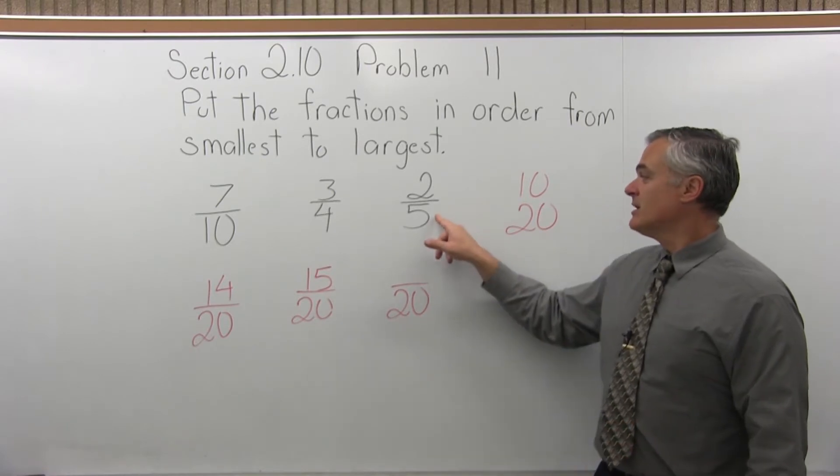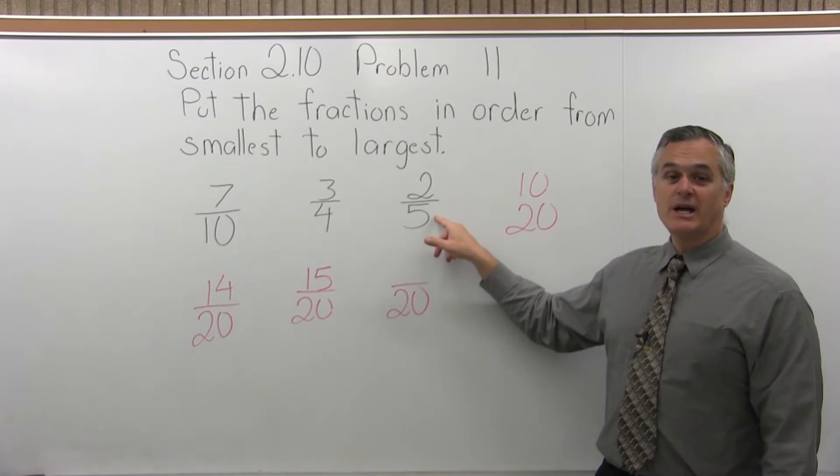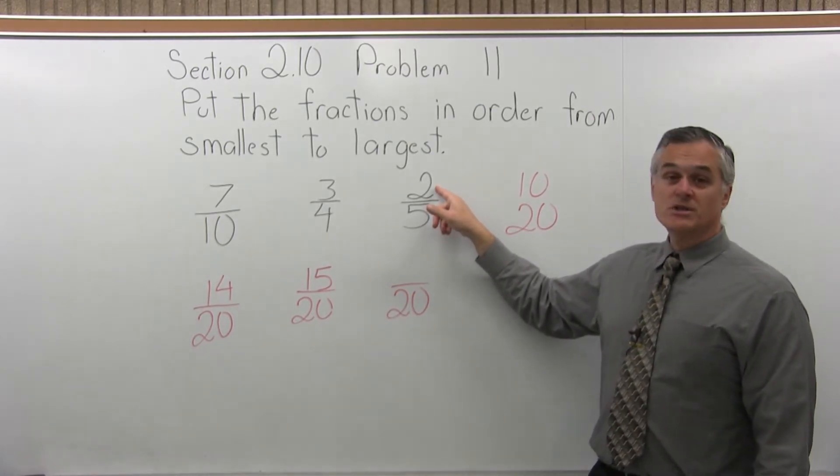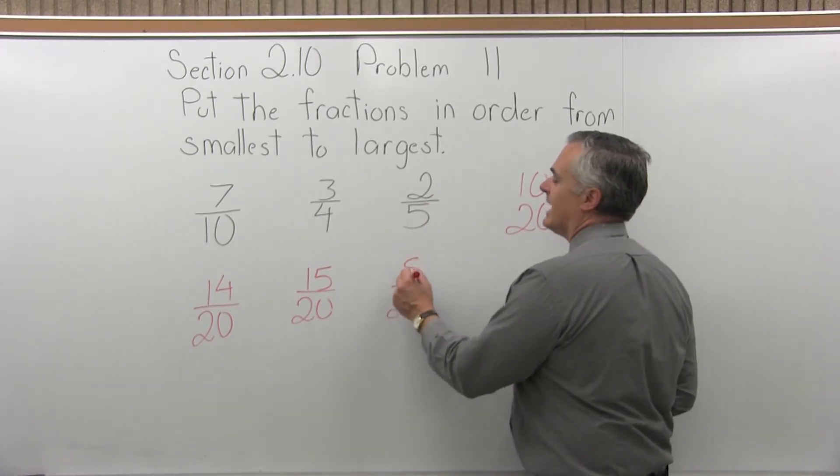Now the 2 fifths, what happened here? The denominator was 5. It turned into a 20. It must have been multiplied times 4. 5 times 4 makes a 20. So the numerator would also be multiplied times 4, so I'd have 2 times 4. 2 times 4 is 8.